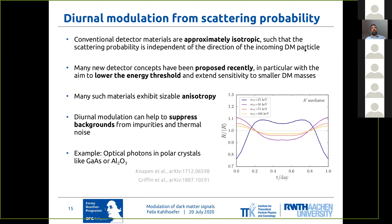But over the past couple of years, there have been many new detector concepts proposed, in particular with the aim to lower the energy threshold and extend sensitivity to potentially much smaller dark matter masses. And many such materials actually exhibit a very important anisotropy, which may result in an anisotropic scattering probability.